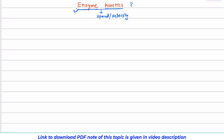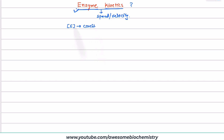Now to study about enzyme kinetics, let's do one very simple experiment. In this experiment, what I am going to do is that I will keep molar concentration of enzyme at a constant level. Remember, whenever anything is represented in a square bracket, that means we are talking about its molar concentration. Here E represents enzyme and this square bracket represents its molar concentration. So here molar concentration of enzyme is kept at a constant level, whereas we will keep increasing the substrate concentration slowly.